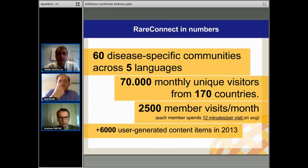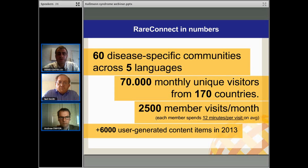Overall, the platform gets 70,000 monthly unique visits from over 170 countries. 2,500 members visit each month out of a total of 10,000 registered members. Remarkably, each member spends about 12 minutes when they're on the community, which means they're responding to forum posts, answering questions and sharing valuable experiences. Last year, the platform and the community had over 6,000 member-generated content items, like stories, forum posts, and webinar videos like this.